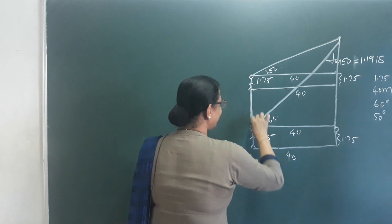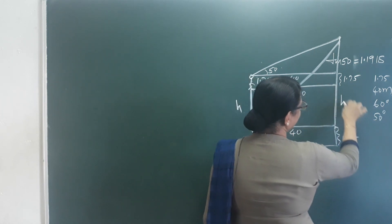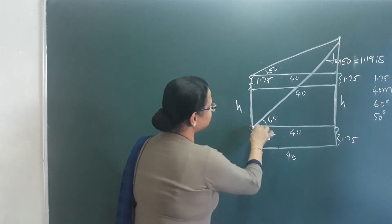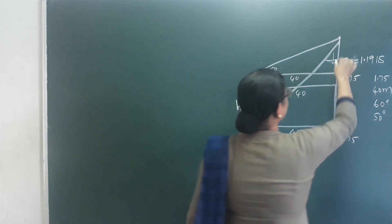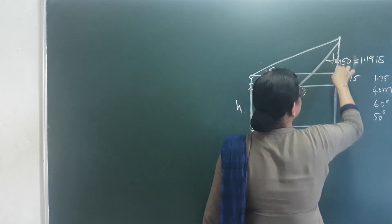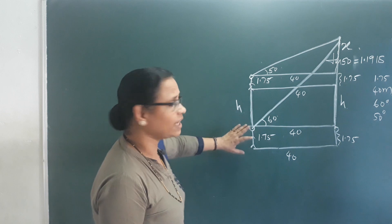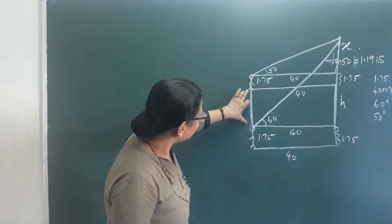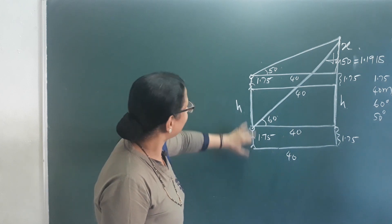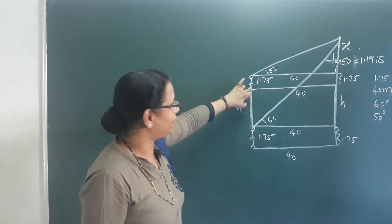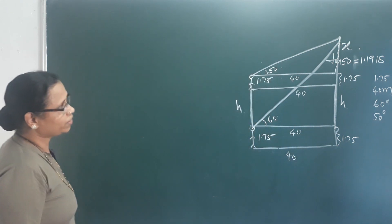Looking from the top, the height is H. This is the same length and the same height. I will take X as this distance. That distance is X. Then we will look at this tower — this is the top of the tower, and this is the top of the hill.